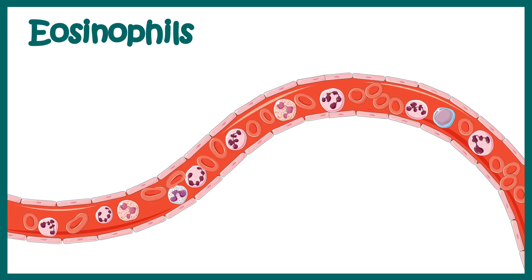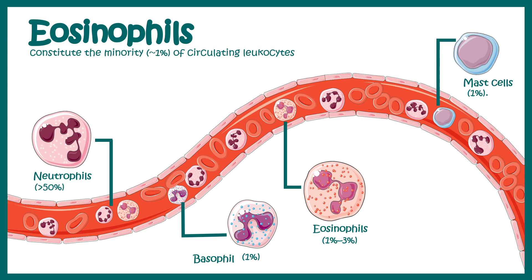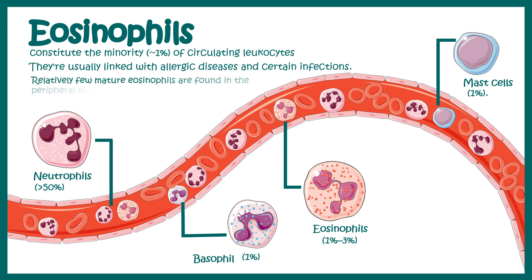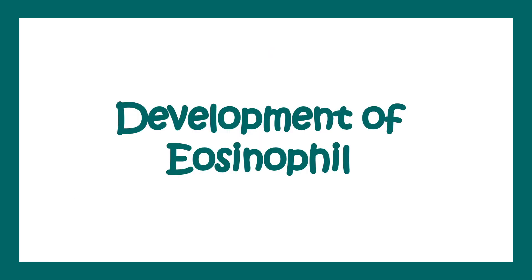Eosinophils constitute 1% of the circulating leukocytes, whereas the majority are the neutrophils which are more than 50%. Eosinophils are involved in allergic responses and other infections. Relatively few mature Eosinophils are found in the peripheral blood, and generally they are found in specific locations in the gut and other locations where they maintain homeostasis.